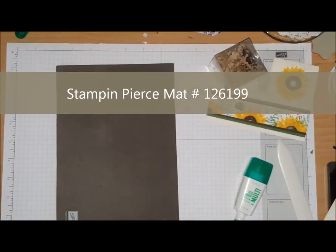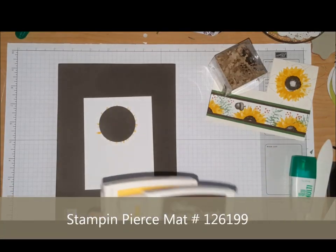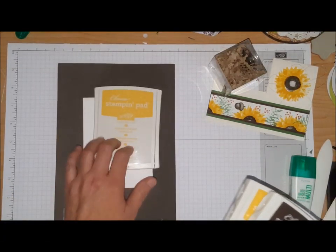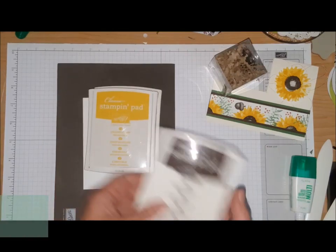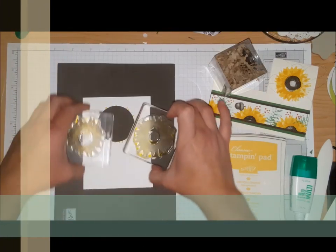I have my Stampin' Pierce Mat and I have a piece of scrap Whisper White paper. The inks that I'm using today are Daffodil Delight, Crushed Curry, and Early Espresso.